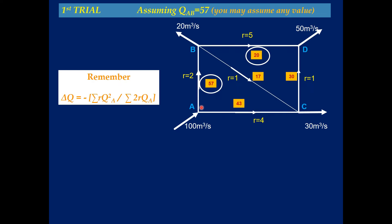At junction B, 20 m³/s is going out, so the remaining from AB is 37. I am assuming that pipeline BD carries 20 m³/s, so the remaining 17 m³/s goes in pipeline BC. At junction C, 43 units are coming from pipeline AC and 17 from pipeline BC, totaling 60. With 30 m³/s as output at C, the remaining 30 m³/s goes toward CD. At junction D, 30 from CD plus 20 from BD gives a total output of 50 m³/s.